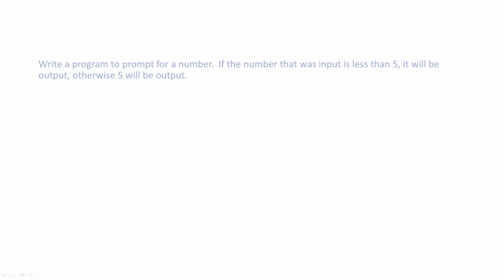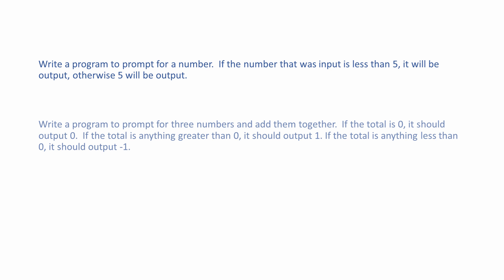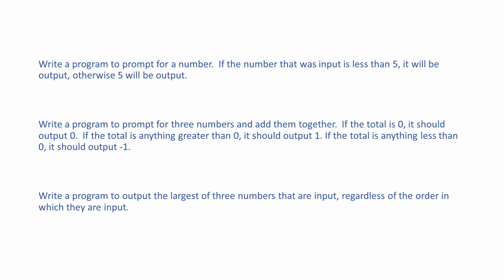Here are some exercises you might like to try. Write a program to prompt for a number — if the number input is less than 5, it will be output; otherwise 5 will be output. Write a program to prompt for 3 numbers and add them together: if the total is equal to 0 output 0, if greater than 0 output 1, if less than 0 output minus 1. Write a program to output the largest of 3 numbers that are input, regardless of the order in which they are input. Pause the video now and I'll show you some solutions in a moment.